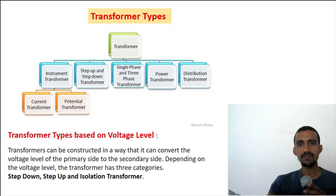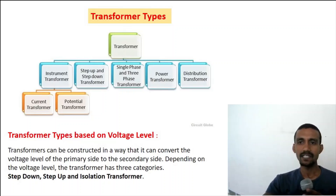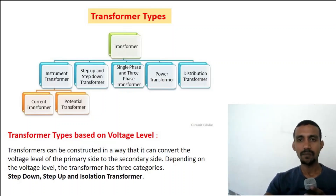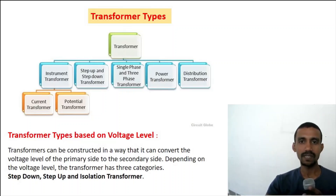Types of transformers: there are several types. One is the instrument transformer — a smaller transformer used for current or voltage measurement. Devices like a clamp meter, multimeter, and voltmeter use the instrument transformer. There is the current transformer (CT) and the potential transformer (PT).